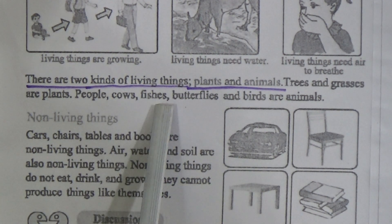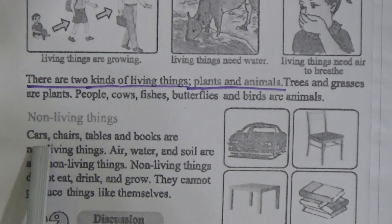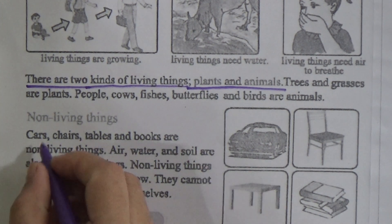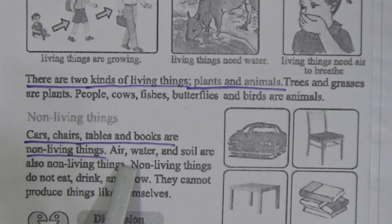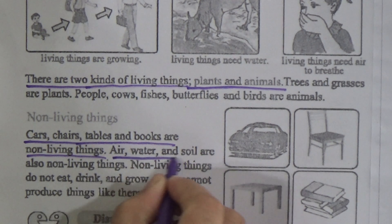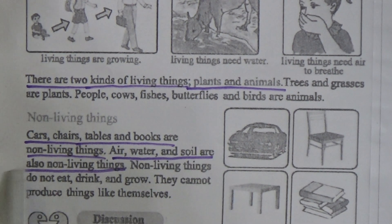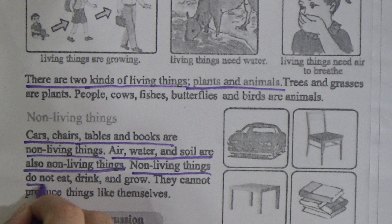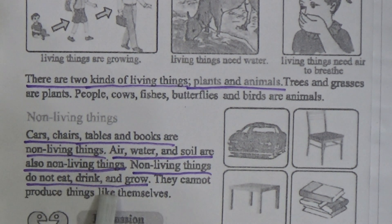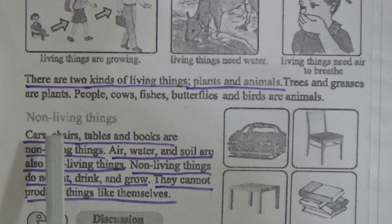Chairs, cars, tables and books are non-living things. Air, water and soil are also non-living things. Non-living things do not eat, drink and grow. This line is important - memorize it. And they cannot produce things like themselves.